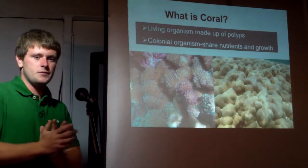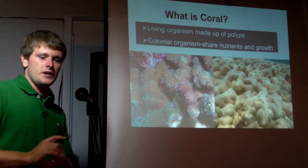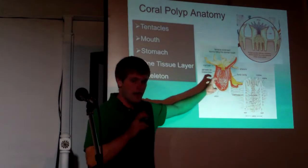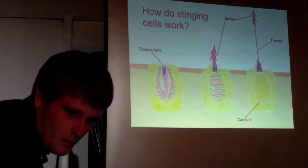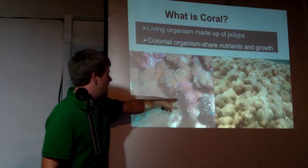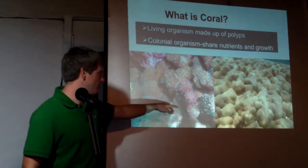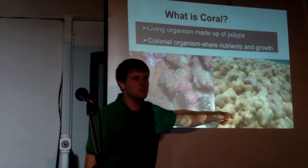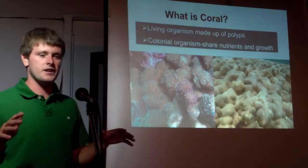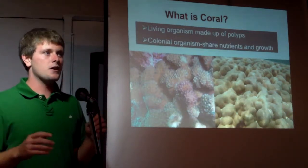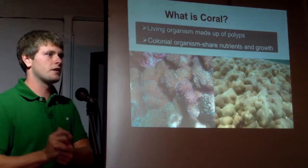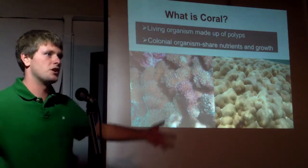Corals are colonial organisms — most corals are. One individual coral polyp is one coral animal. But they live together in colonies of thousands. This is a close-up of cauliflower coral; each dark circle is an individual polyp. This is a lobe coral; each fuzzy bump is an individual polyp. There can be tens of thousands of individual coral animals on one coral colony. The polyps are all interconnected by thin layers of tissue and share nutrients and growth, so anything that affects one polyp can be shared throughout the whole colony.